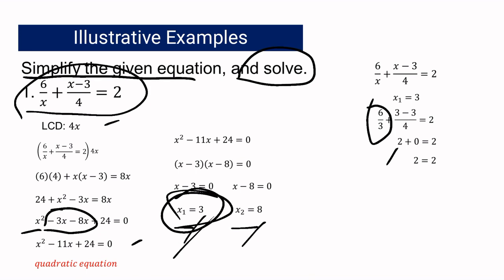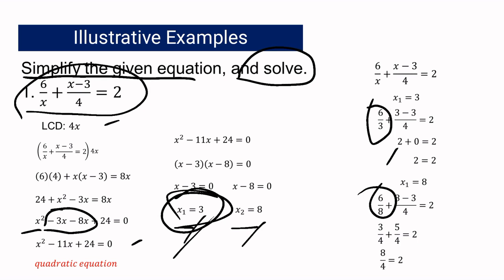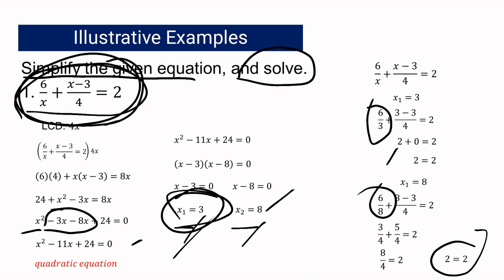Checking X sub 2 equals 8: substituting 8 gives 6 over 8 plus (8 minus 3) over 4 equals 2. Simplifying: 6 over 8 in lowest term is 3 over 4, and 8 minus 3 is 5, so we have 5 over 4. Adding the similar fractions, we get 8 over 4 equals 2, which simplifies to 2 equals 2. Both sides are equal, so X sub 2 equals 8 is also correct. Therefore, the solutions of this rational algebraic equation are 3 and 8.